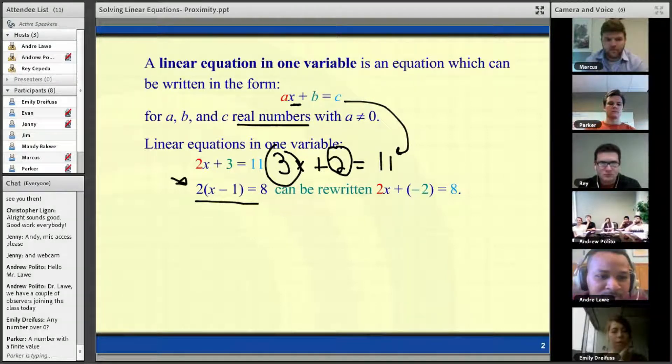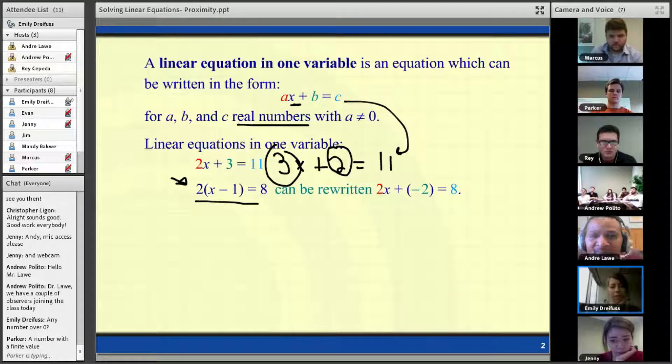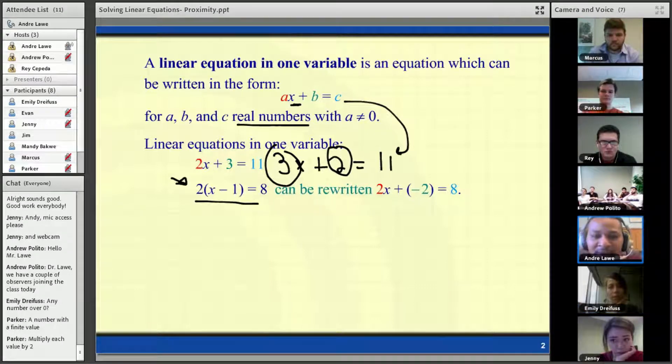See a few people typing. You'd multiply, correct? So you'd multiply 2 by x and then 2 by negative 1. Thank you, Emily. That is correct.